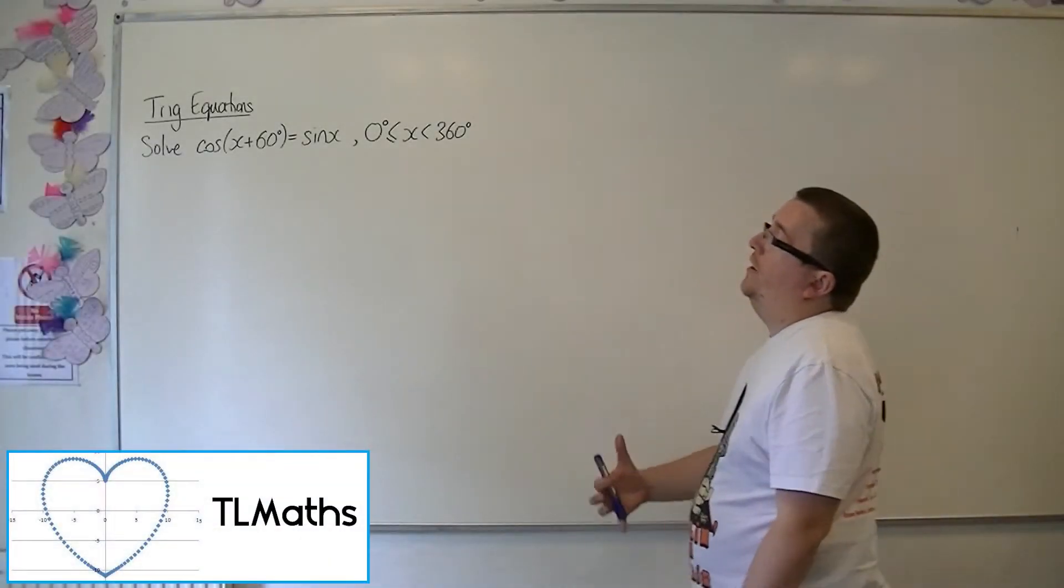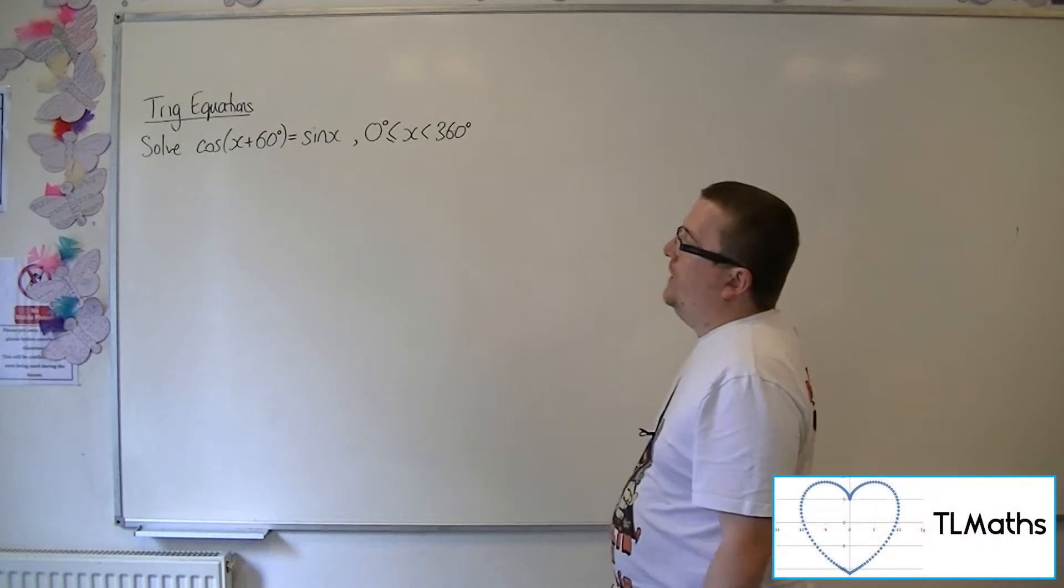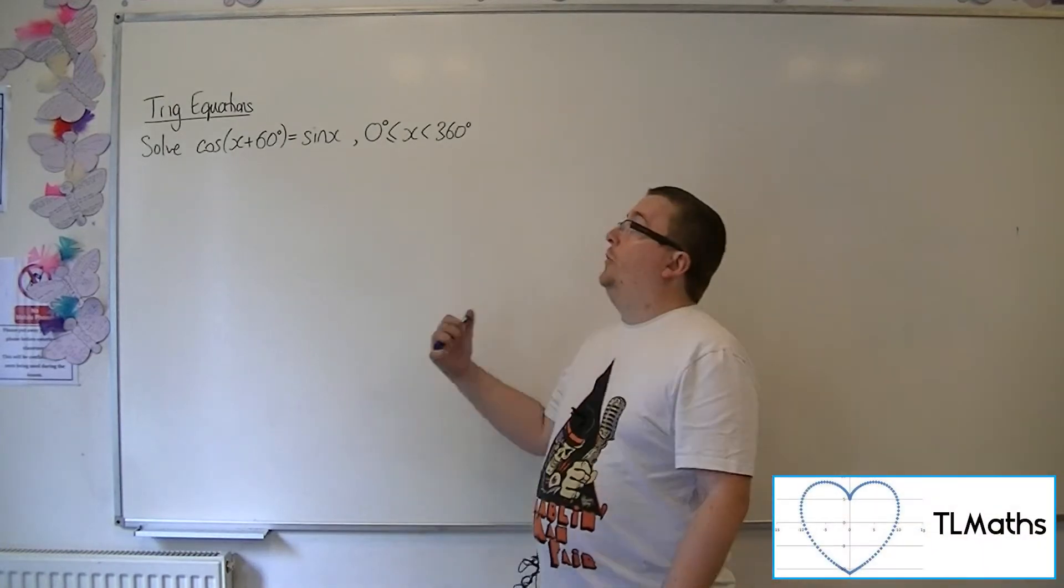OK, so let's say I want to solve cos(x + 60°) = sin(x) between 0 and 360.